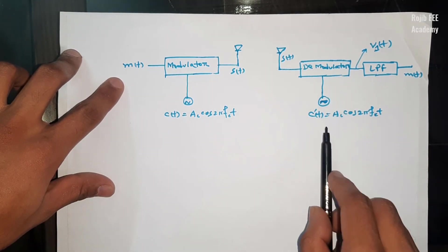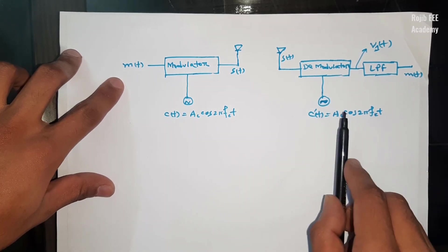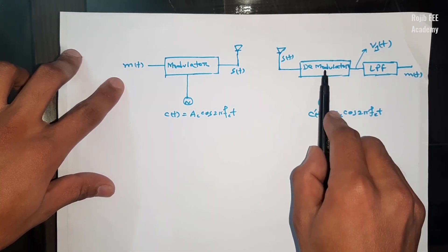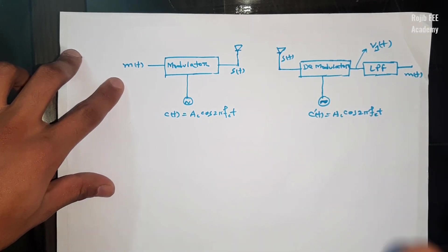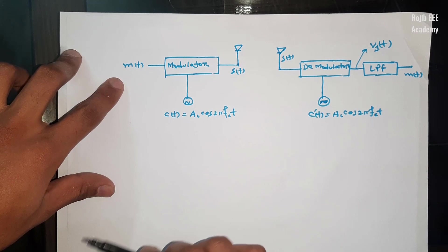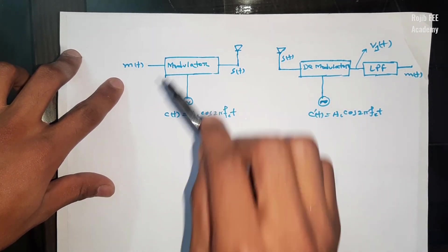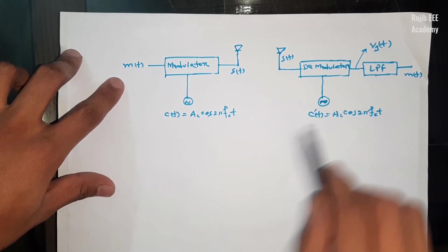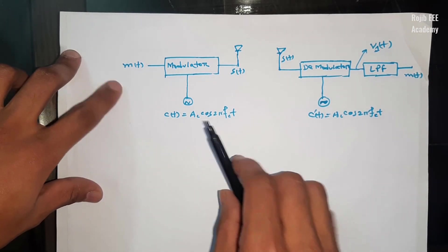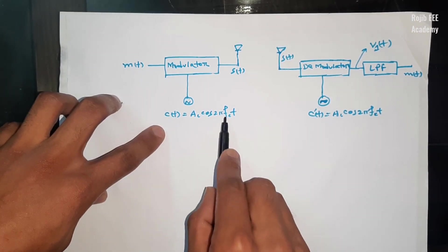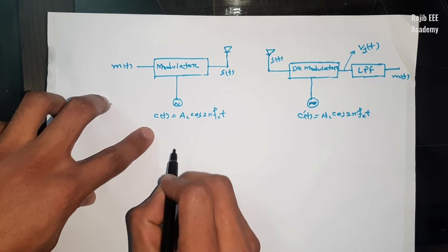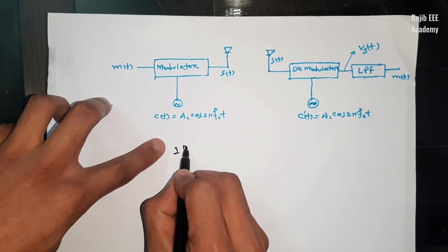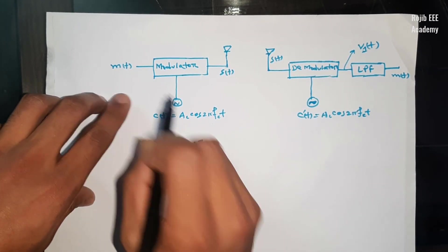Now we have to look at the Demodulator. We use the Demodulator — we multiply the signal. So we can see the details of the Demodulator. We use the Demodulator to process the received signal.